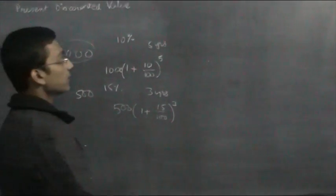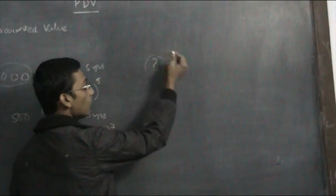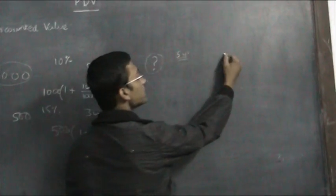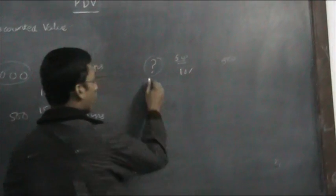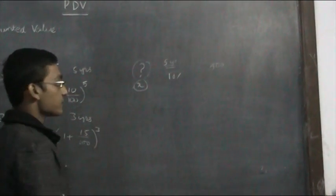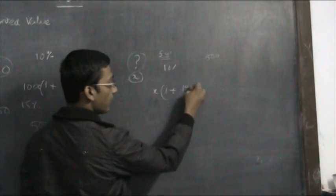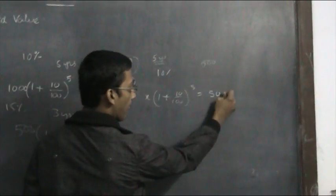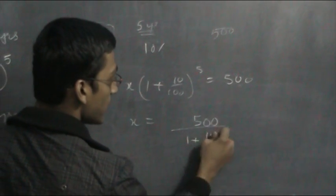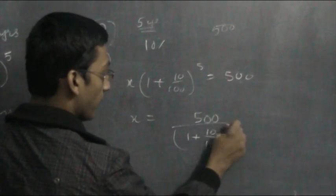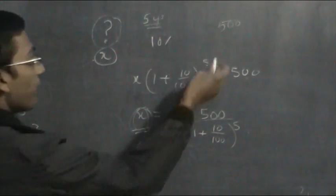Now suppose I am asked: what should I deposit now so that after 5 years it becomes 500? The interest rate is 10%. Let x be the deposit. Then x × (1 + 10/100)^5 = 500, so x = 500 / (1 + 10/100)^5. Whatever value we get for x, we call x the present discounted value of 500.